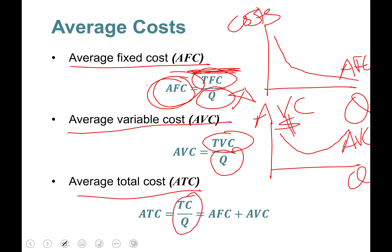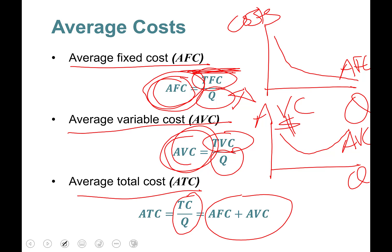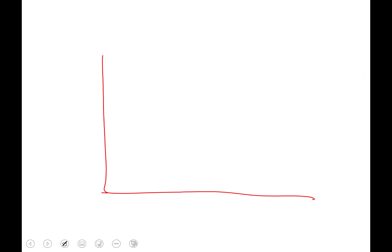Average total cost is total cost divided by quantity. You can also add average fixed cost and average variable cost to find average total cost — same thing. Let's look at what all of them look like together.